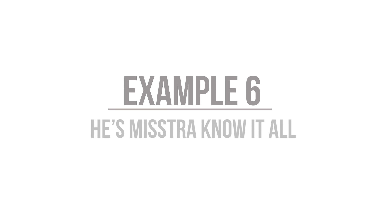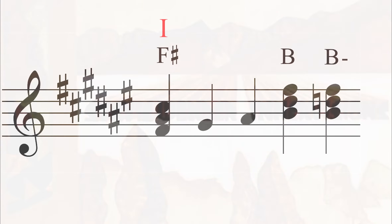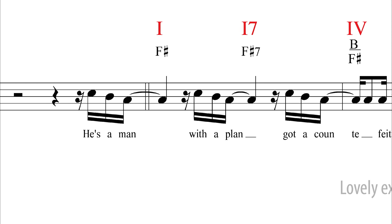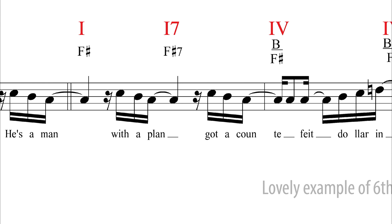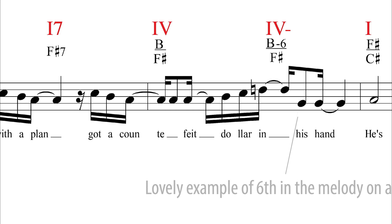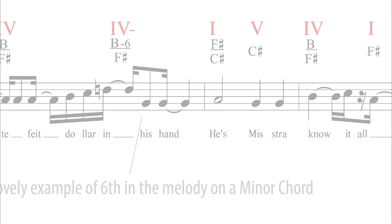Example 6: He's Mr. Know-It-All, from the colossal 1974 Inner Visions. This is in the key of F-sharp. Chord IV is B and IV minor is B minor.